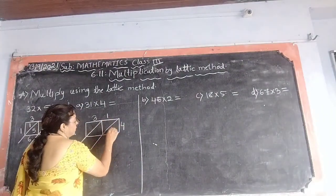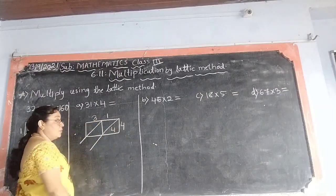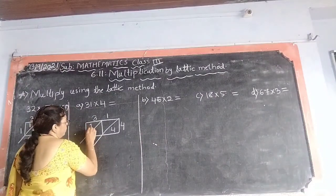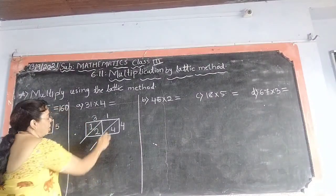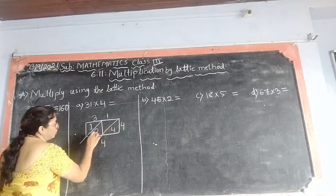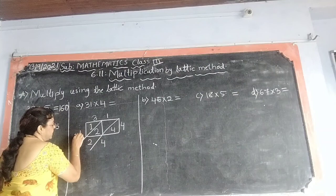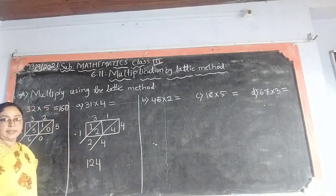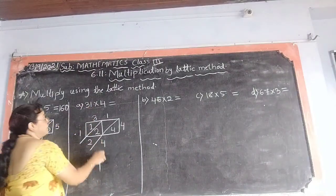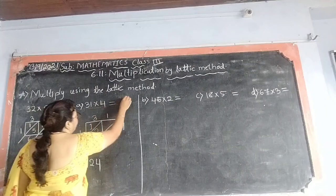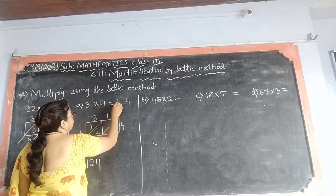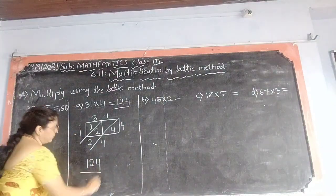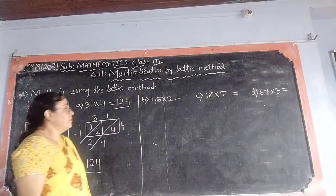Now, 4 ones are 4. 4 threes are, 4 ones are 4, 4 twos are 8, 4 threes are 12. So, what we will do? We will write 12 like this. Now, 4 as it is, 2 as it is, 1 as it is. And answer is 124. I hope you are understanding. Now, regular method. See? We will check if our answer is correct or not. 4 ones are 4, 4 threes are 12. Answer is correct. So, this is our answer.